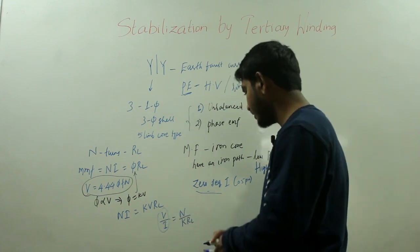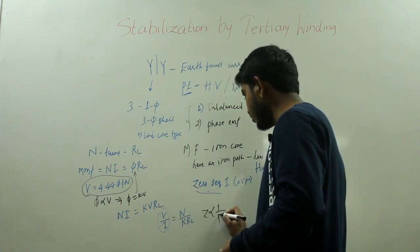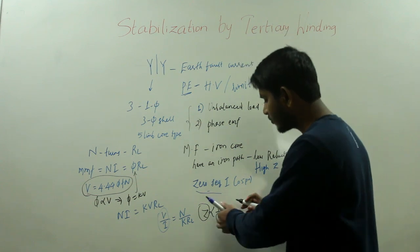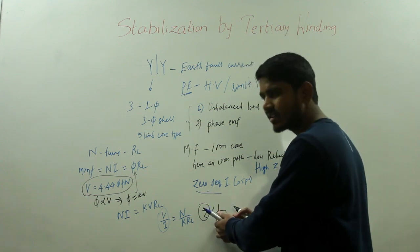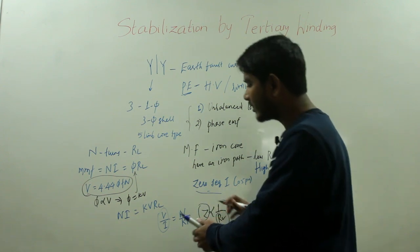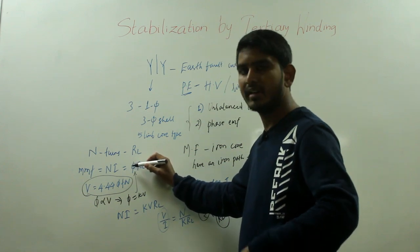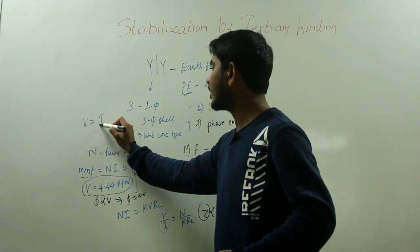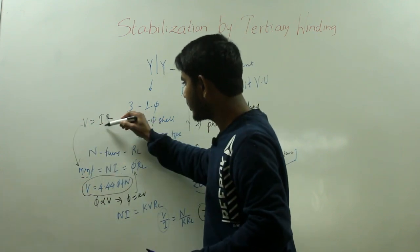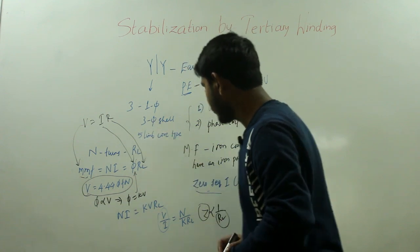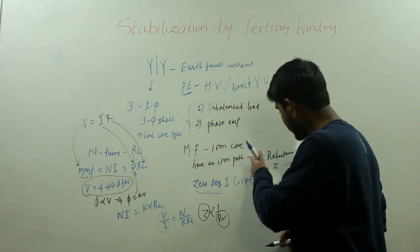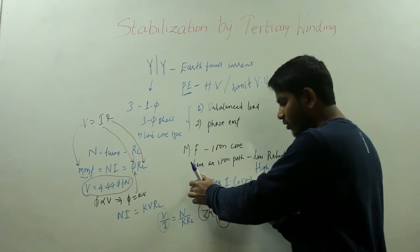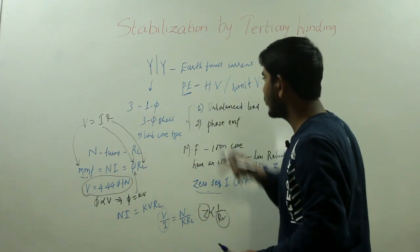V divided by I is nothing but impedance Z, so Z is inversely proportional to RL. When you have low reluctance, you will have high impedance. Comparing the magnetic circuit to an electric circuit: reluctance corresponds to resistance, magnetic flux corresponds to current, and MMF corresponds to voltage. So remember, low reluctance means high impedance, and therefore the zero sequence current will face high impedance in its path, meaning you cannot operate your protective equipment.